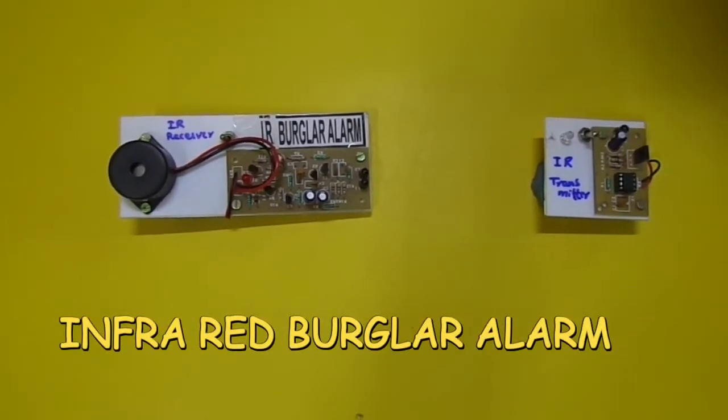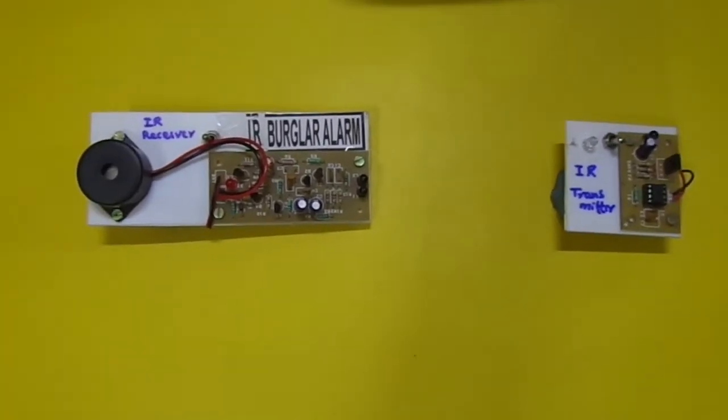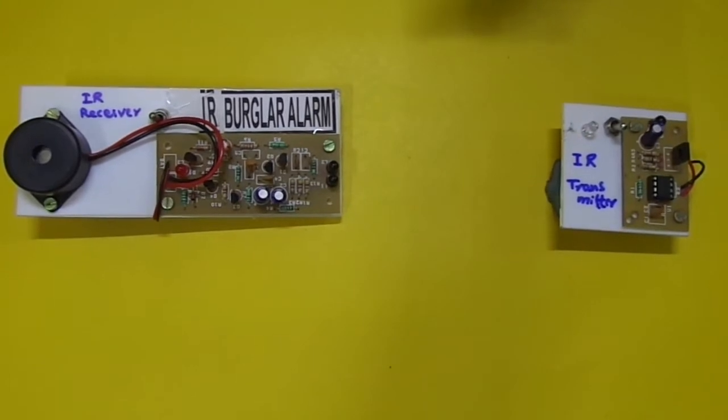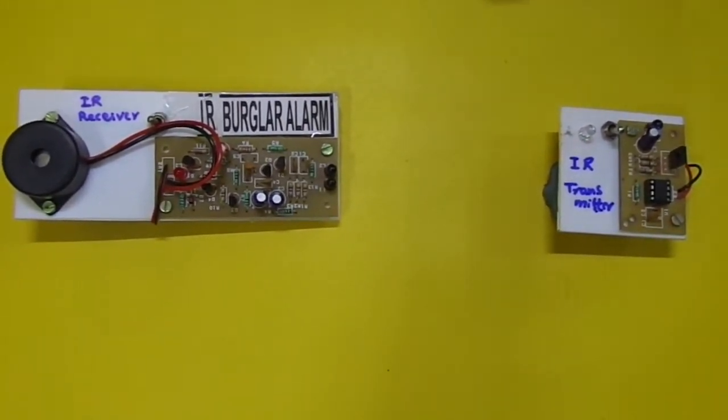It is widely used in security systems. The advantage is infrared rays - we cannot see these infrared rays, but they can travel for longer distances. The burglar alarm mainly consists of two units: one is the transmitter unit and another one is the receiver unit.